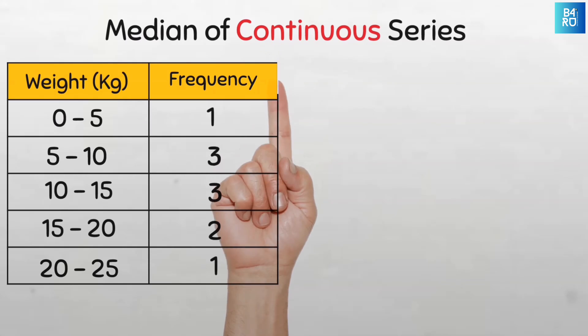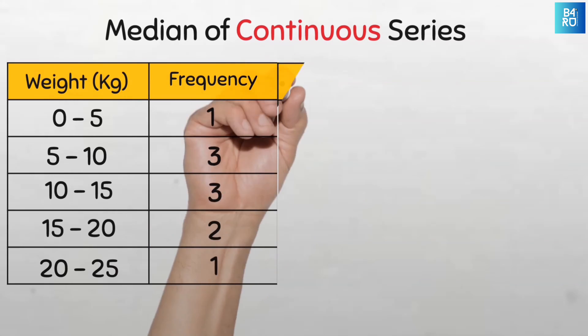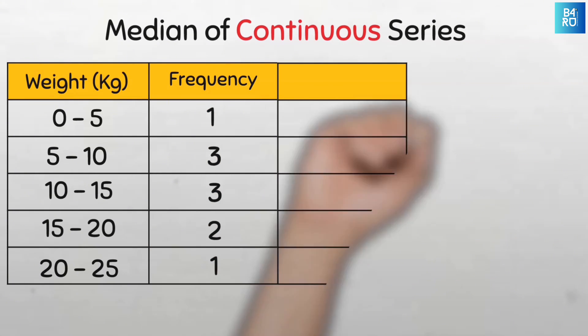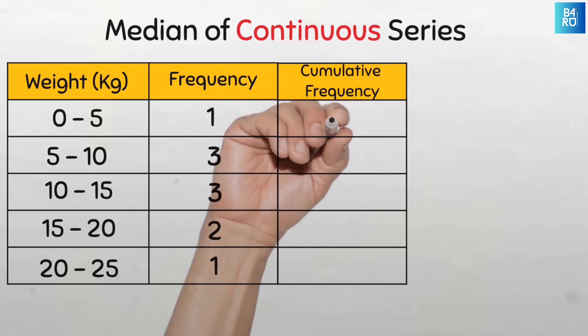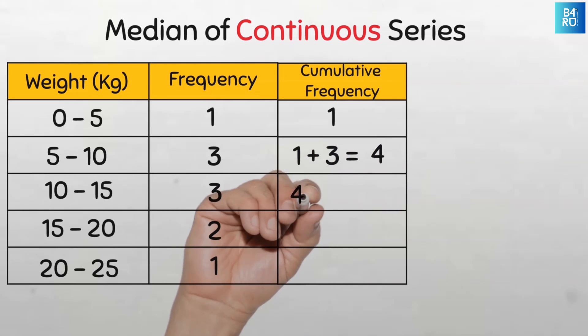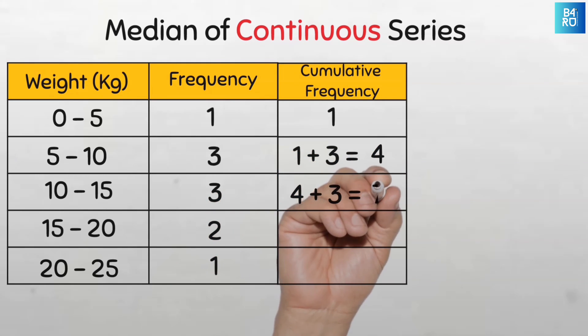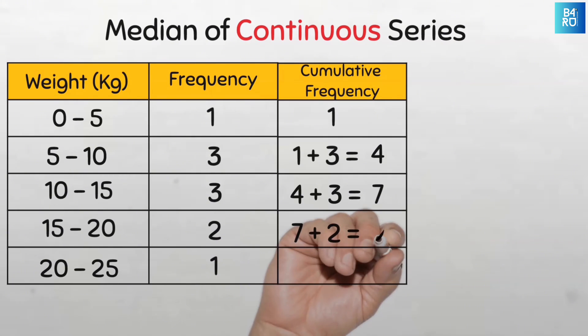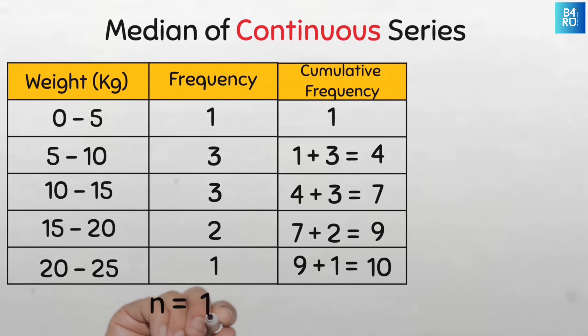To find the median for continuous series data, we will need to first compute the cumulative frequency just like we did for discrete series data. So let us create a new column here for cumulative frequency. This will be 1, then 1 plus 3 is 4, then 4 plus 3 is 7, then 7 plus 2 is 9, and then 9 plus 1 is 10. So to confirm if the cumulative frequency is correct, the last cumulative frequency should be the total of all the frequencies. So you can see here it is 10 and here it is 10.